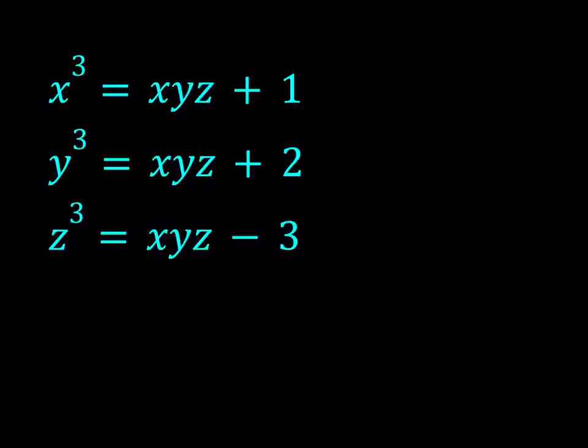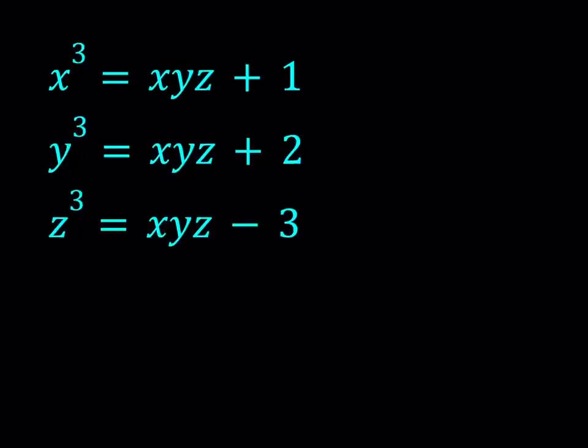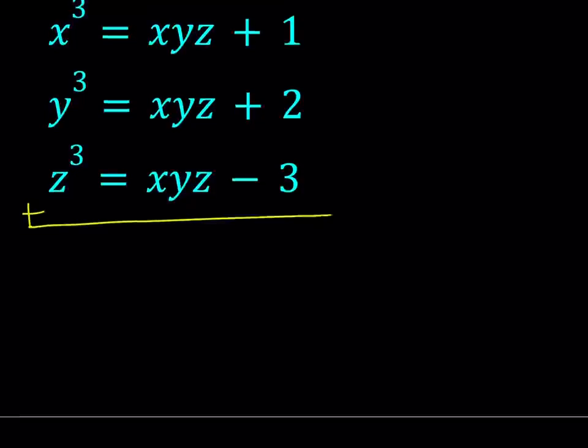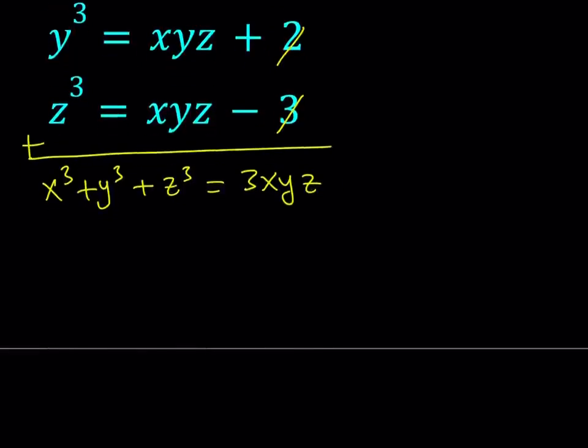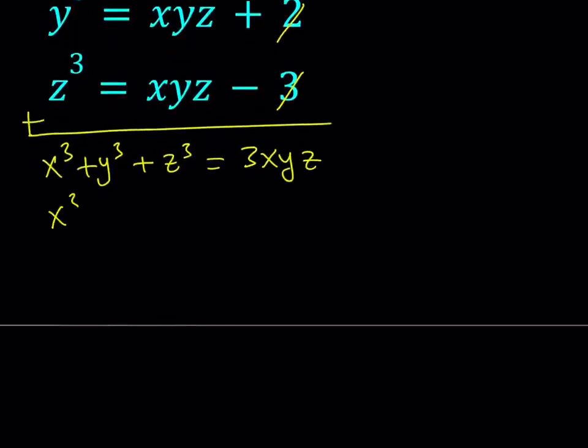So one of the things you are probably thinking about here is adding these equations up. Why? Because if you add them, you get rid of the constant terms. This becomes 0. So we get x cubed plus y cubed plus z cubed is equal to 3xyz. Now this is a special polynomial because if you subtract 3xyz, you get a factorable polynomial. And x plus y plus z divides this polynomial actually. You can just go ahead and factor it.